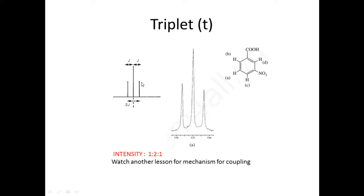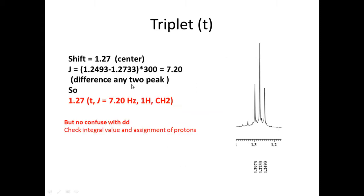The J value is the spacing between any 2 peaks equal to J value. You can calculate any of 2 peaks difference and multiply by spectrometer frequencies. So here is the calculation. You can calculate here 2.73 is the center peak. Very easy.